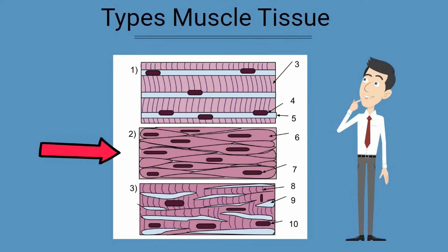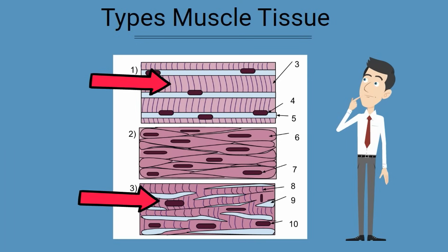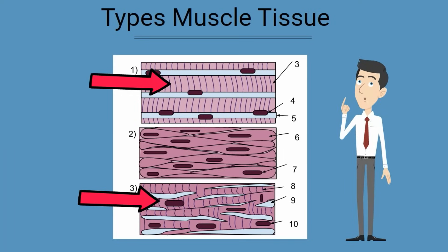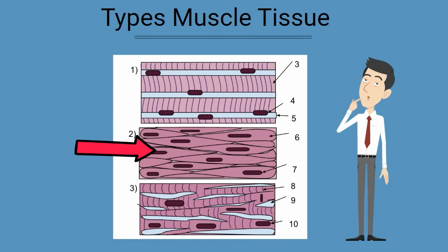There are three main types of muscle tissues: smooth, cardiac, and skeletal. Cardiac and skeletal are striated muscles because these muscles have regularly repeated stripes formed by proteins called myofilaments. Smooth muscles do not have this arrangement of myofilaments. You can see these stripes of myofilaments in the pictures.